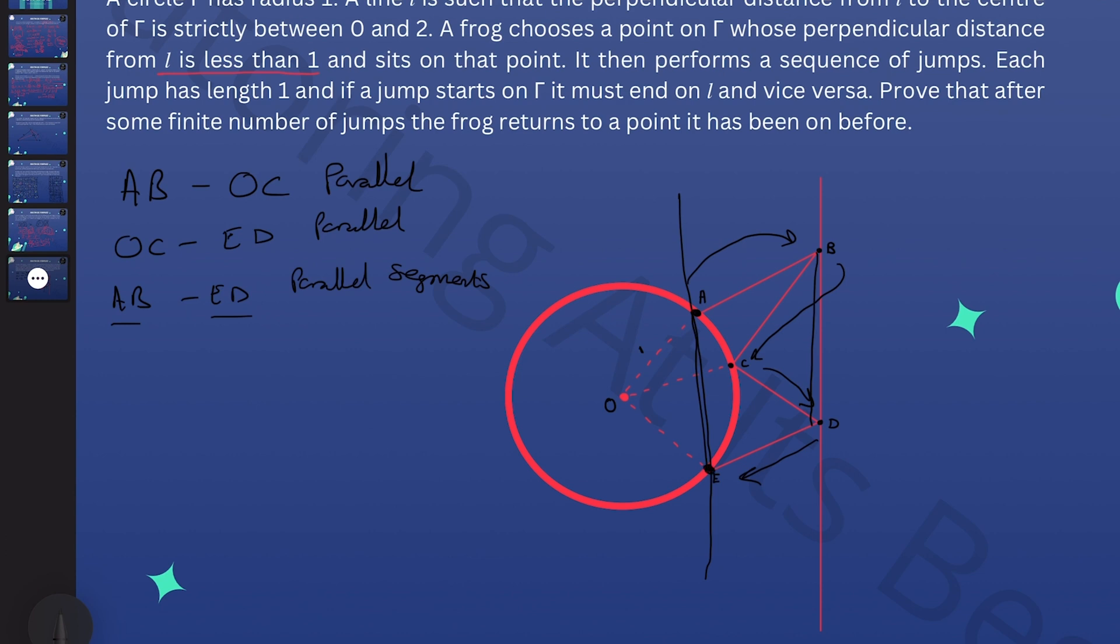Now if the frog launches from E and does another 4 jumps, where do you think it's going to end up? It's going to end up back home at A, and that's from 8 jumps.